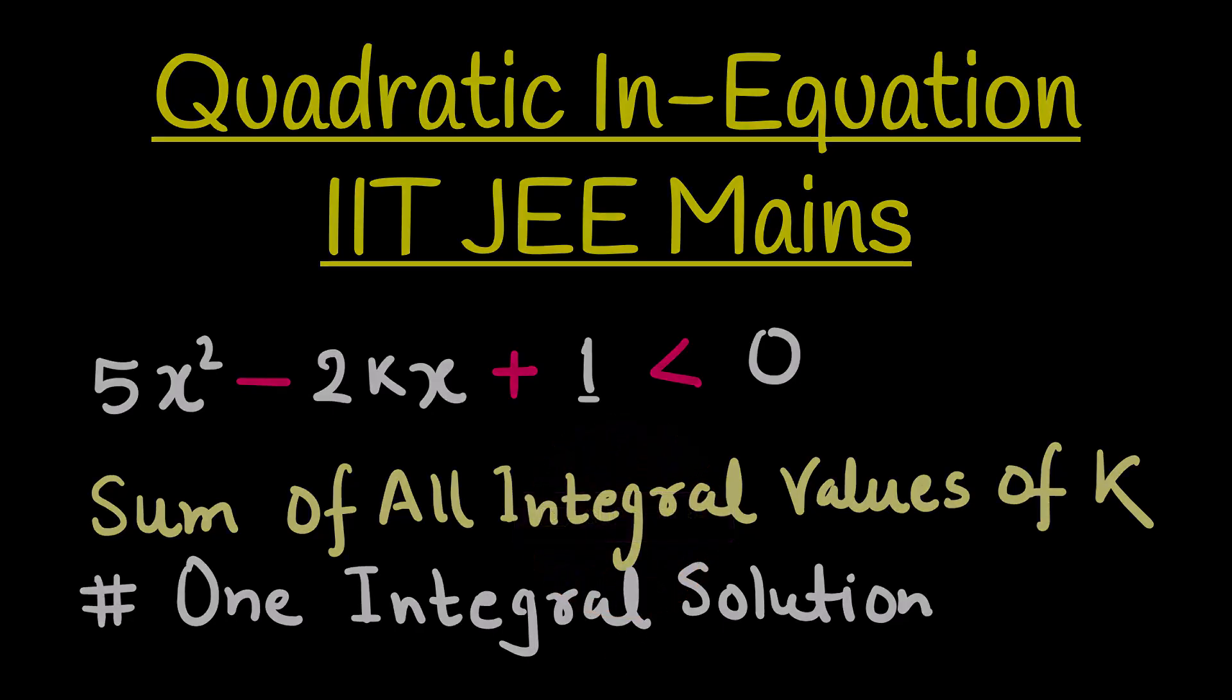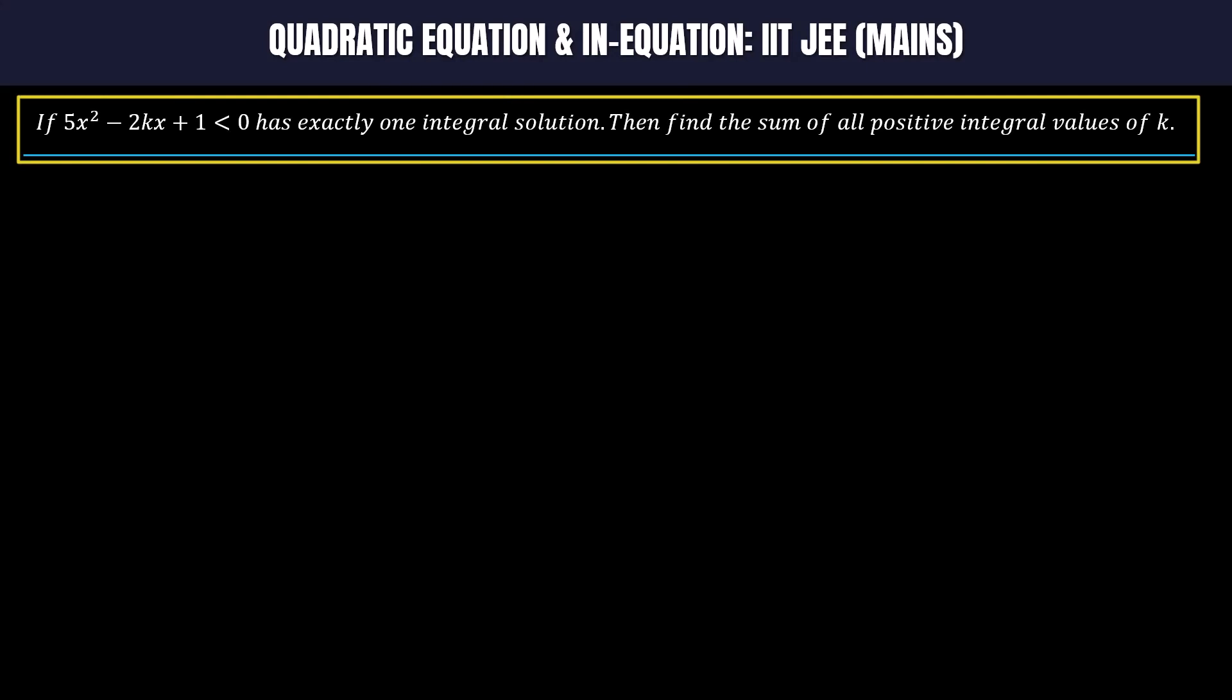The question is as follows: If 5x² - 2kx + 1 < 0 has exactly one integral solution, then find the sum of all positive integral values of k.